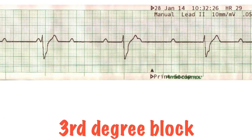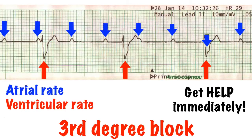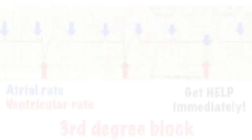Third degree, complete or AV block, is even more serious. Here there is total disassociation between the P waves and the QRS complexes. The impulse keeps going from the atria, but the AV node is on strike. Because the ventricles sit waiting for an impulse, if they don't get one, they assume their lines of communication have been cut off and eventually fire on their own. This is an escape rhythm — an emergency plan just to keep things going.